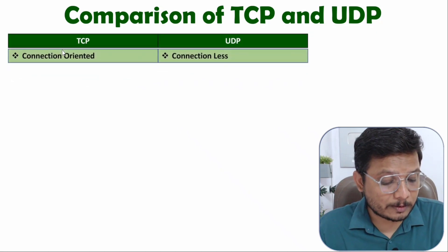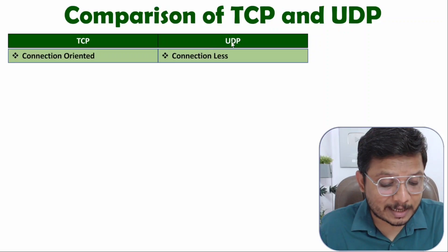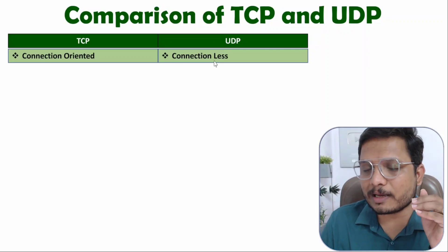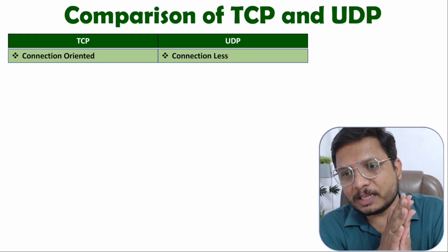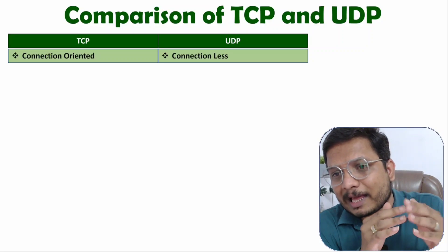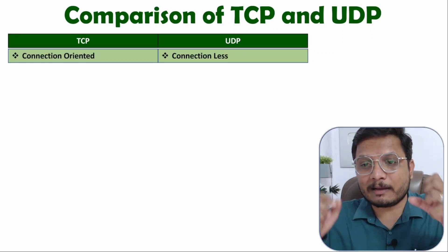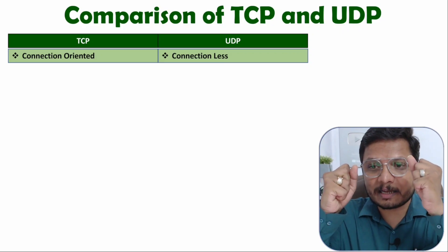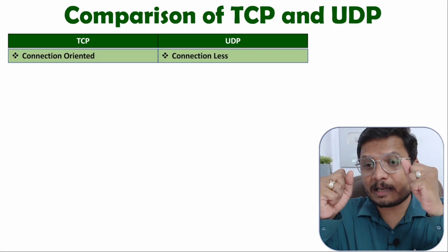Now let's understand these differences along with parameters for more clarity. TCP is a connection-oriented communication protocol and UDP is connectionless. Connection-oriented means handshaking is performed — there is a transmitter and a receiver, and the transmitter wants to transmit to the receiver.